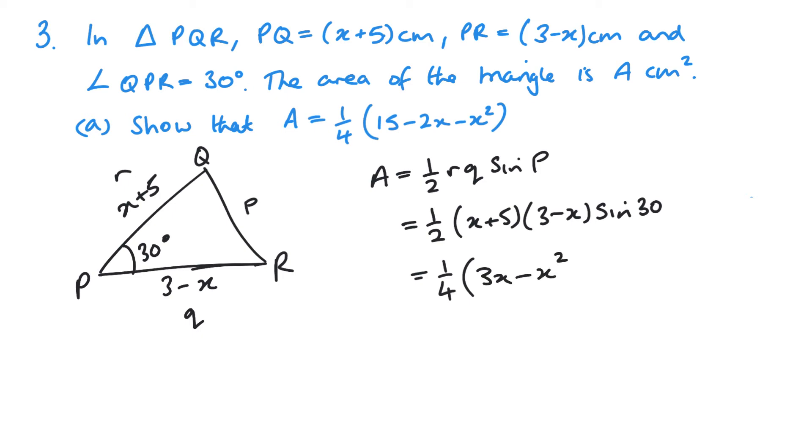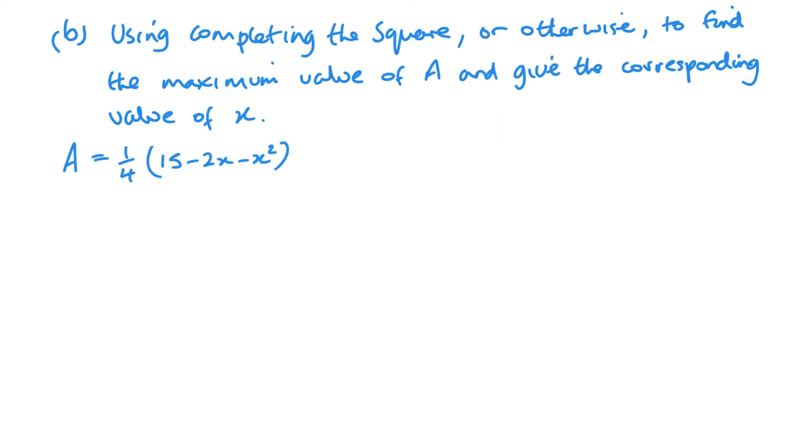I've got minus X squared plus 15 minus 5X. 1 quarter times that equals 15 minus 2X minus X squared. Now, it is important that I show these two steps because it's a show that. So I need to be clear with what I'm doing.